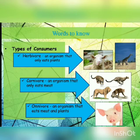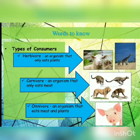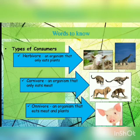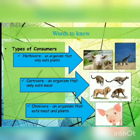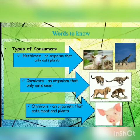The second type is carnivores — organisms that only eat meat. Examples include lion, tiger, cheetah, and jaguar. The third type is omnivores — organisms that eat both meat and plants. Examples are pig, cat, and dog. So we have learned three words: herbivore, carnivore, and omnivore. Combined with the previous slide, that's a total of five key words.